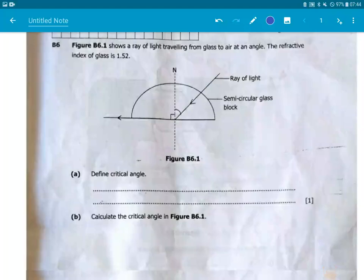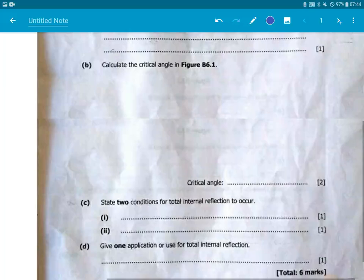Hello, ladies and gentlemen. I have an exam question here that came in the 2023 GCE paper 1. The question says, Figure B6.1 shows a ray of light traveling from glass to air at an angle. The refractive index of glass is 1.52. Define the term critical angle. Calculate the critical angle. So what is critical angle? This is the only question that we have.